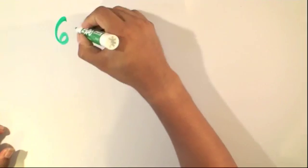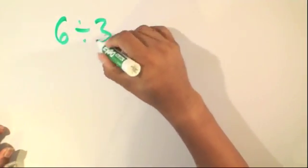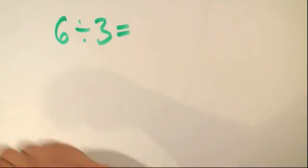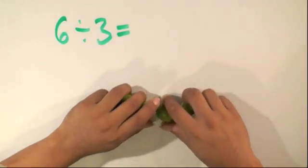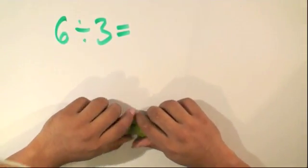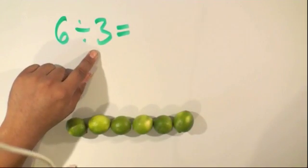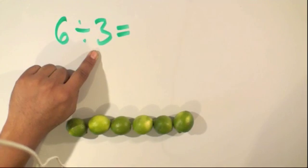We'll have 6 divided by 3, and we'll take a look at this visually. 6 would represent the number of items that we have. So we have 6 limes, and 3 would represent the number of times we would divide it equally by.